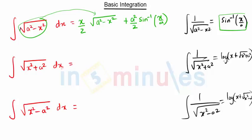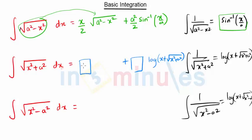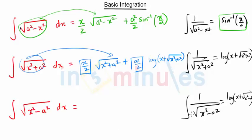So again we will have plus something — log of this term x plus root of x square plus a square. Here we multiply something, and here also we multiply by x by 2. Here also we multiply by a square by 2, and then we multiply by this term root of x square plus a square.